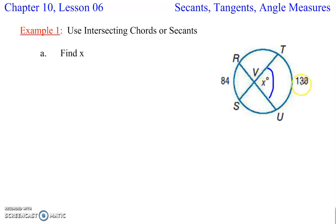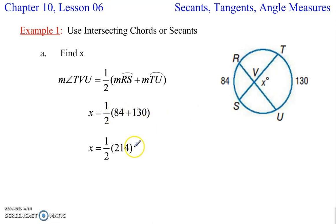So to find x, remember we just average these two together. We'll add together 84 and 130, and then find half of that. Average those together. Add them, divide by 2, and we get x is 107. The average of 84 and 130. Pretty easy.